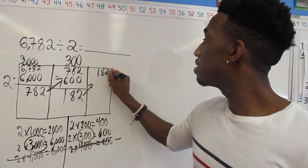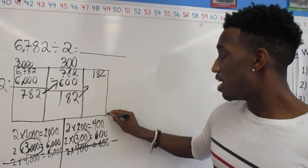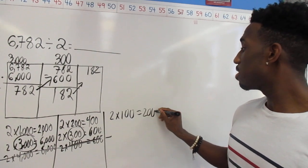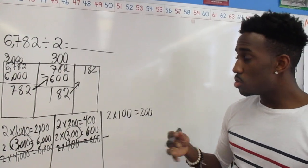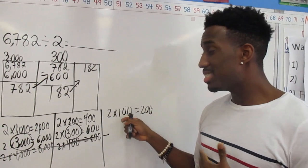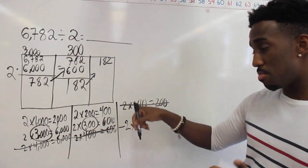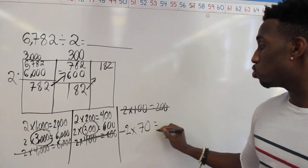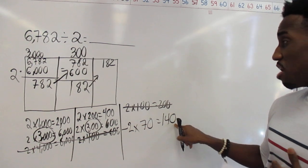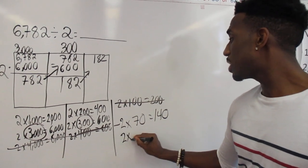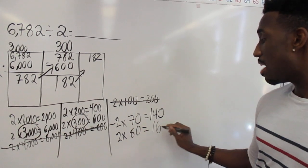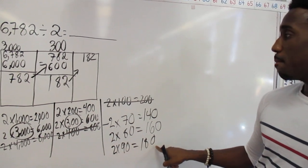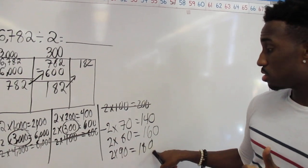Let's bring it over. Now my greatest place value is still hundreds, but 2 times 100 is 200, and 200 is bigger than 182, so I have to go to a smaller place value. A place value smaller than hundreds is tens. I want to find 2 times some ten that gets me closest to 182. Let's try 70: 7 times 2 is 14, add a zero — that's 140. Let's see if I can get even closer. 2 times 80: 8 times 2 is 16, add a zero — that's 160. Let's try 90: 9 times 2 is 18, add a zero — that's 180. I didn't go over 182, I'm very close. So this side length is going to be 90.